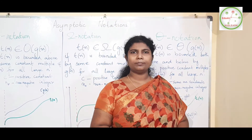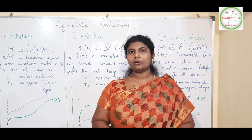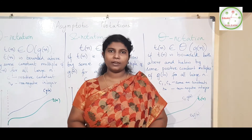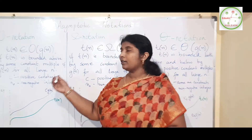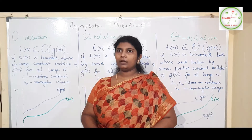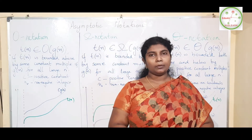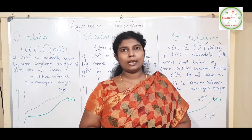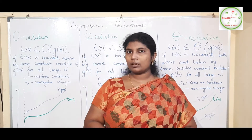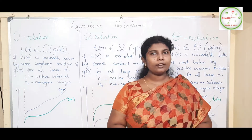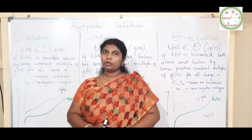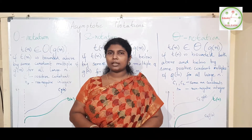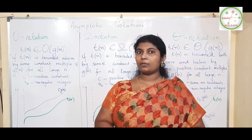Now let us start learning about asymptotic notation in algorithms. This asymptotic notation is a very important comparison tool, and it is represented by three Greek symbols. We already have seen what an algorithm is — it is a sequence of unambiguous procedures for solving a problem, where for a desired output with the given input, we get the answer in a finite amount of time. After analyzing, we know that input plays a very important role.